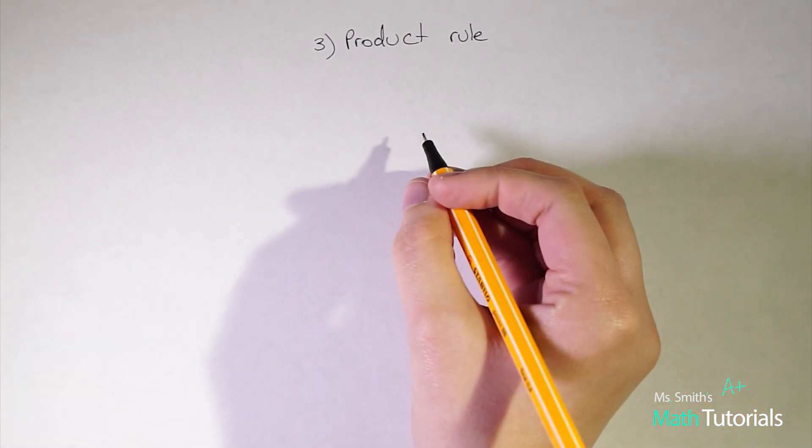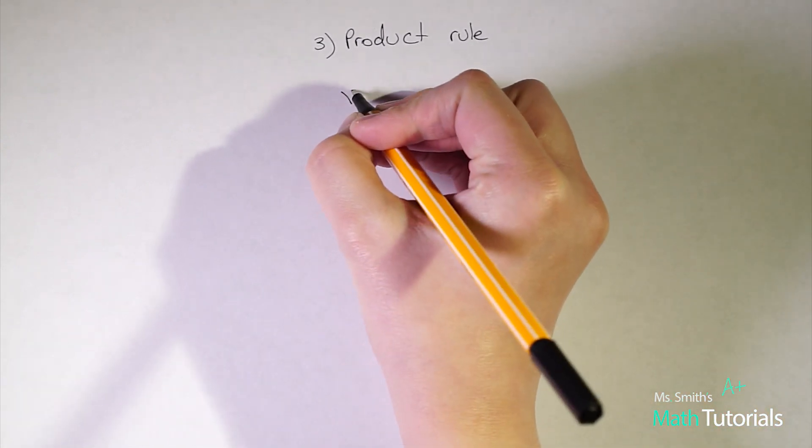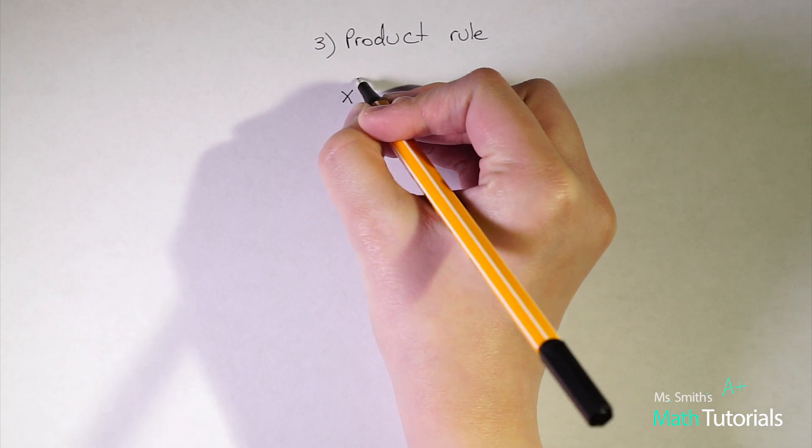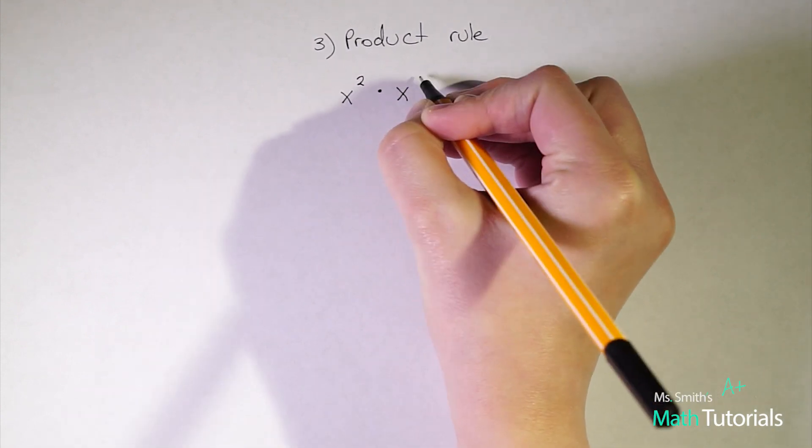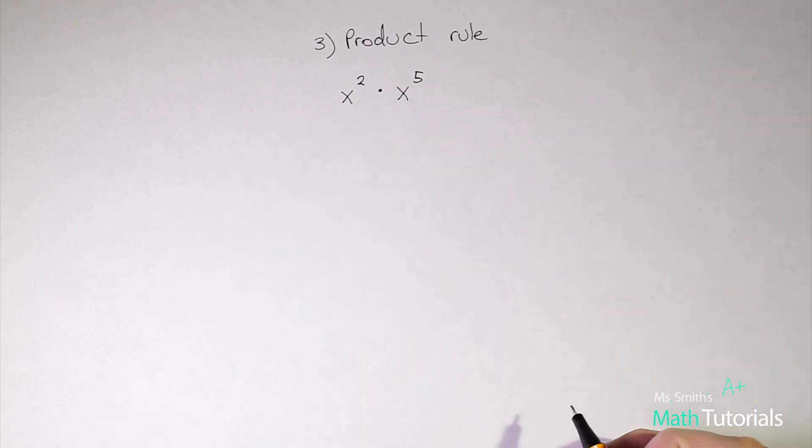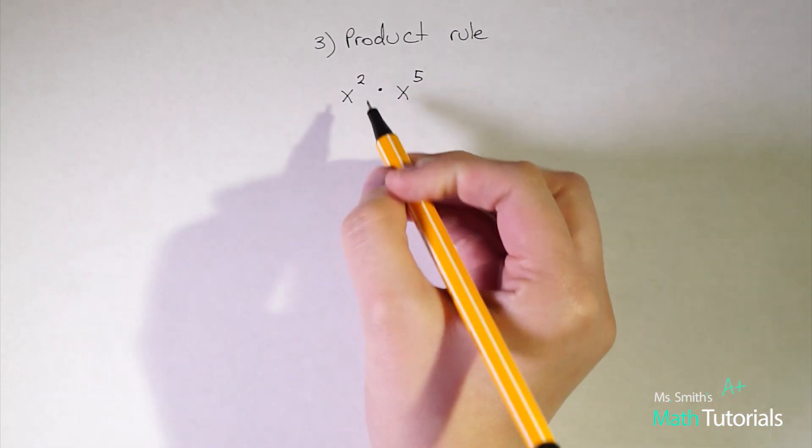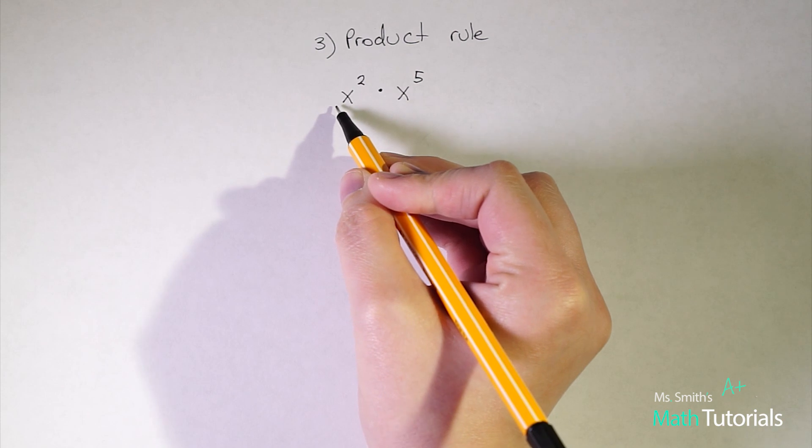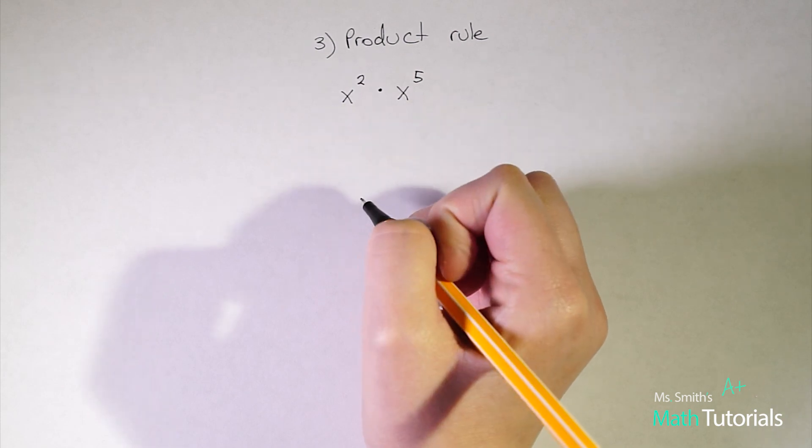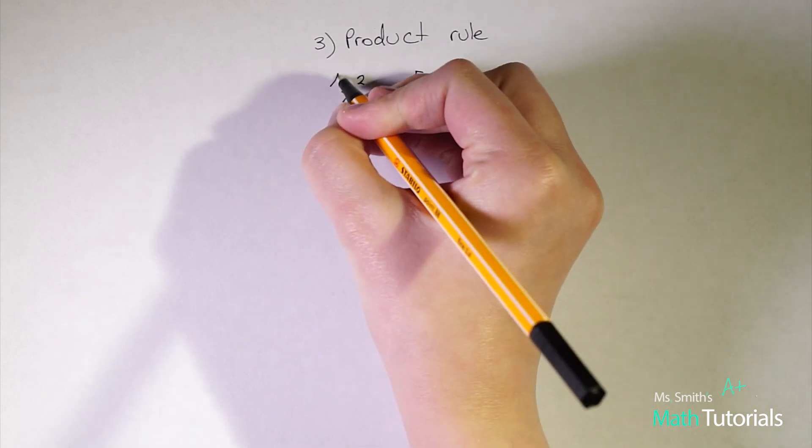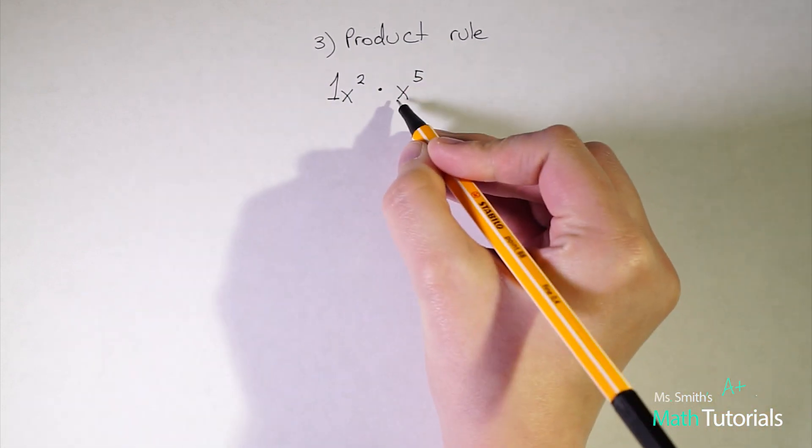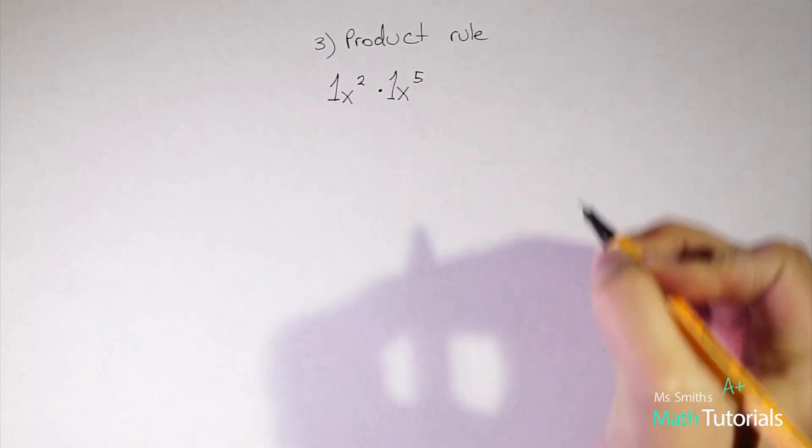So when it comes to exponents, our product rule, we might have x to the power of two being multiplied by x to the power of five. The first basic thing to understand is that anytime you don't have a number, you don't see a whole number directly in front of a variable or a letter, there's an understood one there. So there would also be an understood one here.